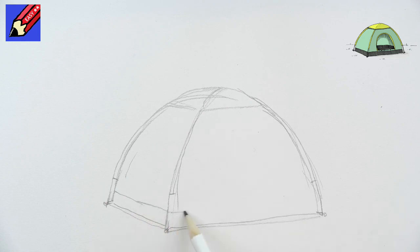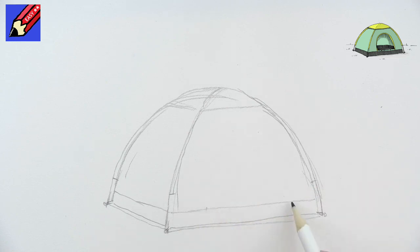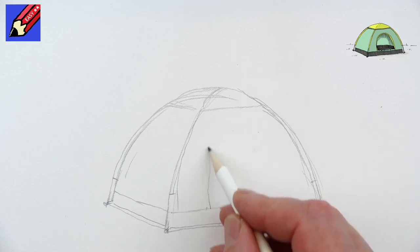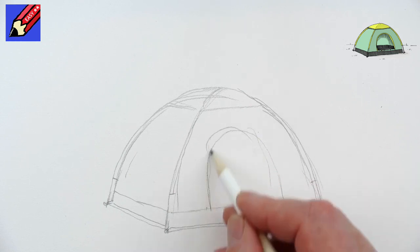This is the dark part, which is the part of the ground sheet. Then we're going to want to go from there to about there. So we'll come up and around like that.